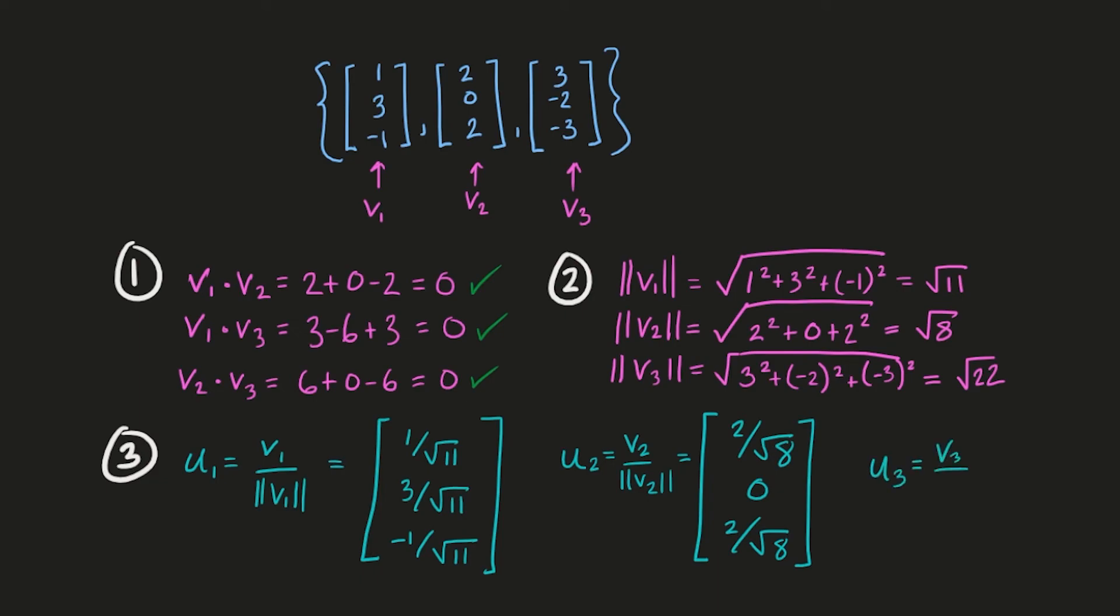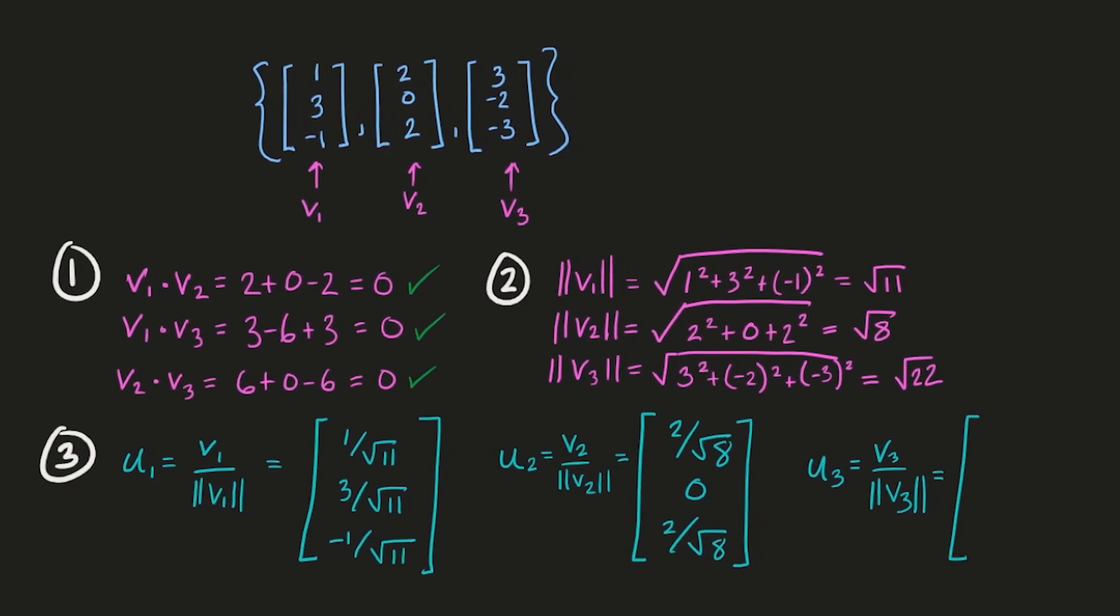And then for u3, we've got 3 over root 22, negative 2 over root 22, and negative 3 over root 22. And that's it. So now if you just put u1, u2, and u3 into curly brackets, that creates an orthonormal set. Thanks very much for watching, and I'll see you next time.